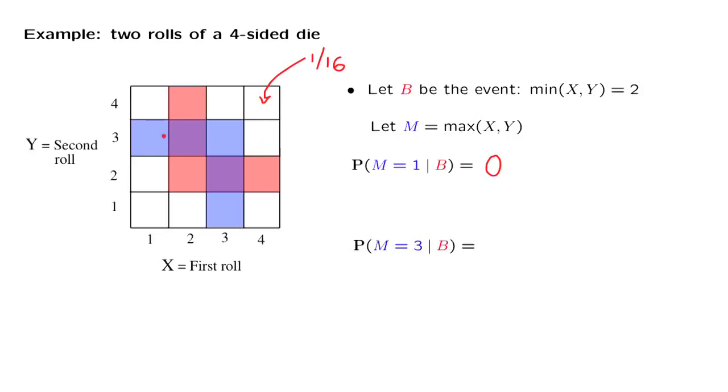M is equal to 3. The maximum is equal to 3 if one of the dies resulted in a 3, and the other die resulted in something that's 3 or less. So this event here corresponds to the blue region in this diagram.